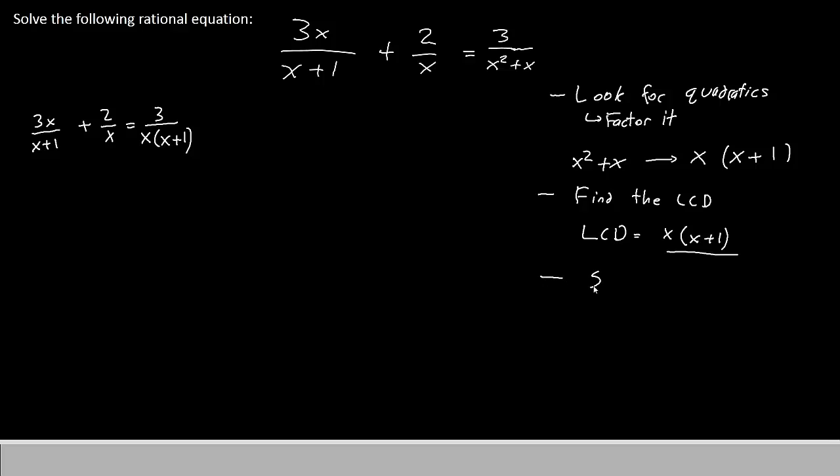Now that we know the LCD, let's see what each term needs in order to reach the LCD. Our first term says x plus 1. What it's missing is the x. Let's make a note of that. So that our first fraction, we're going to put an x on the bottom and an x on the top. For our second term, it's already got an x, so it needs the part that it's missing. That's x plus 1. So for it, we'll put an x plus 1 on both the top and the bottom. The third term already has x times x plus 1, so it's okay. We don't need to do anything to it.